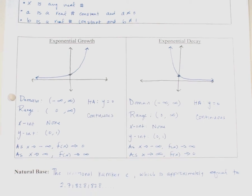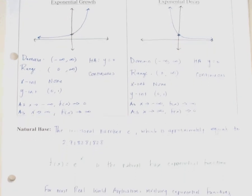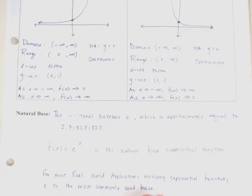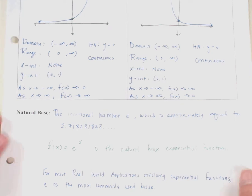The base of an exponential function can be any number. One number we use most commonly is called the natural base — an irrational number e, which is approximately equal to 2.7. So f of x equals e to the x power is the natural base exponential form most commonly seen in real-world applications. We're now going to take this information and graph exponential functions, so go ahead and turn the page when you are ready.